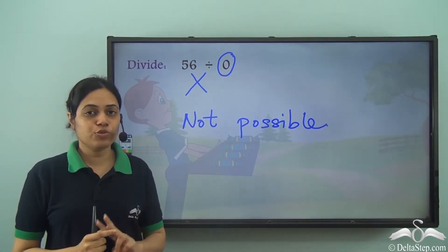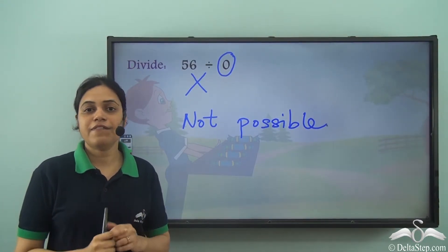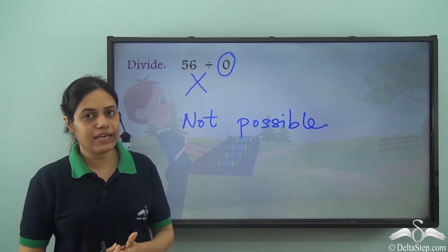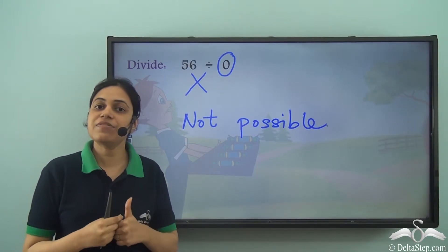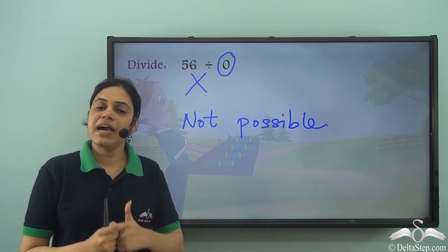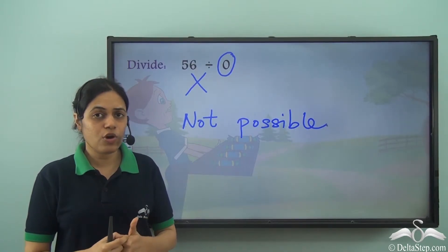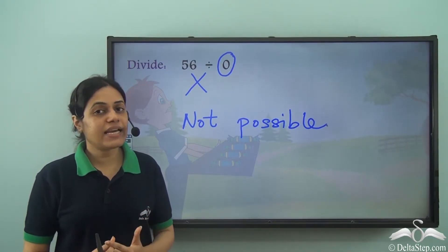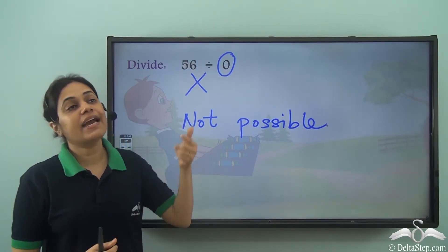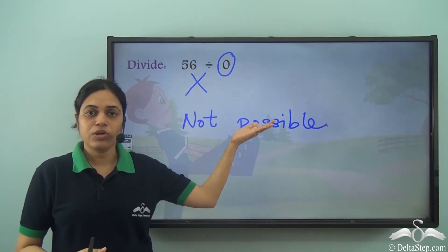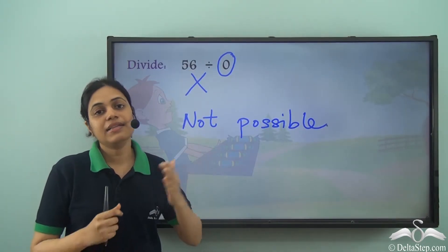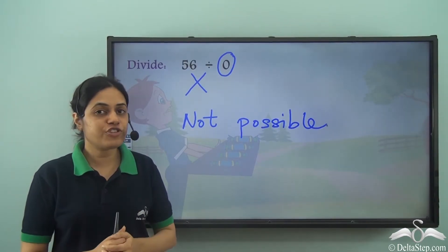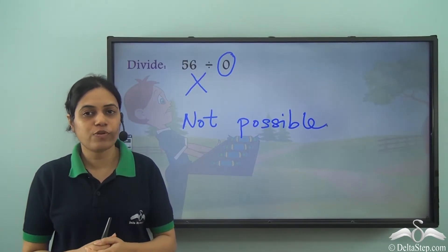So we have seen two things. One: when I divide zero by any number — that is, when zero is the dividend — the answer is zero, no matter what the number is. Two: if I divide any number by zero, that is not possible. Division by zero is not possible.